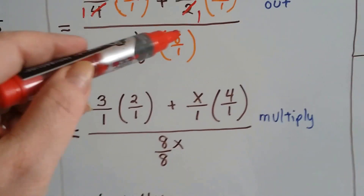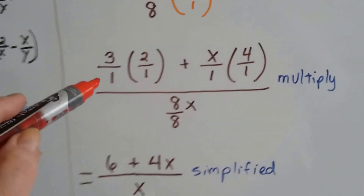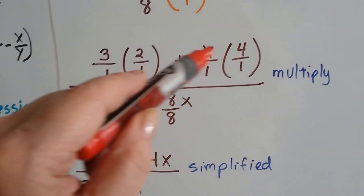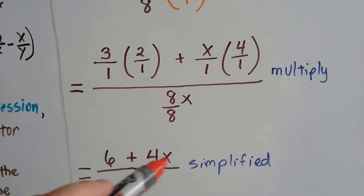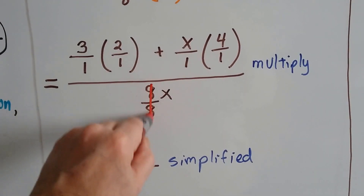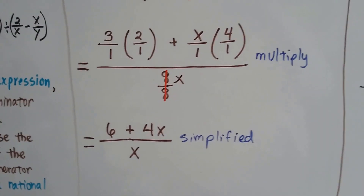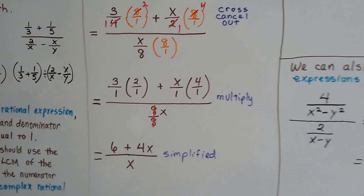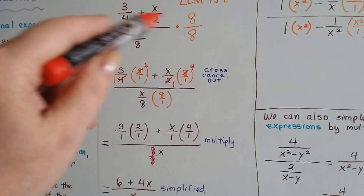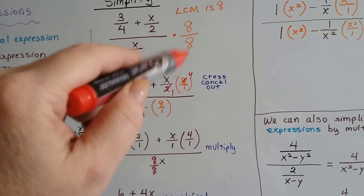And for this one, we have 8x over 8. Well, this is 6 over 1, or 6. And this is 4x over 1, or 4x. And 8x over 8 — this is our buddy the invisible 1 — so we just have an x. So now it's simplified. That wasn't too hard, was it? We just multiplied the numerator and denominator by the least common multiple written as a 1.